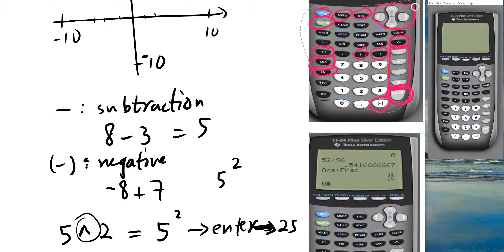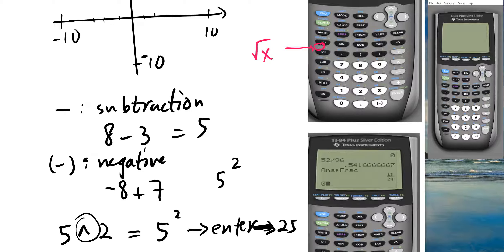If you press SECOND and x² that gives you the square root symbol. So you can compute things like the square root of x or the square root of 2 — it's a useful key.